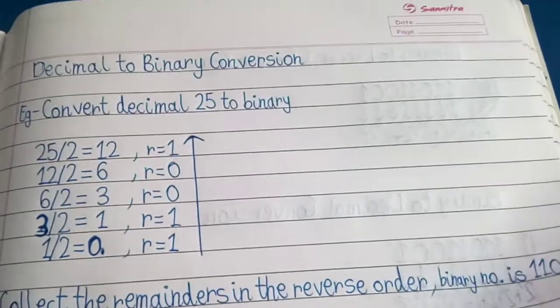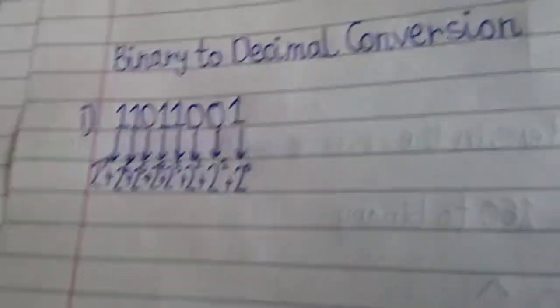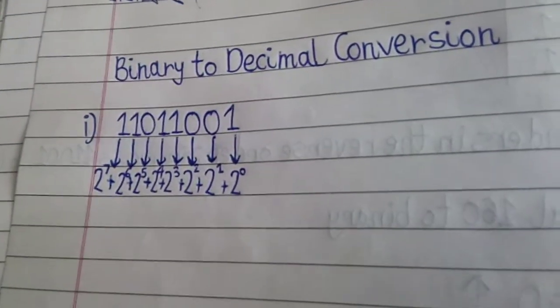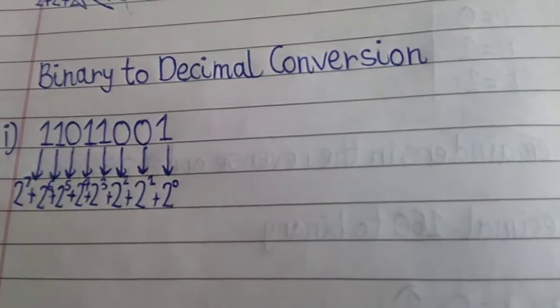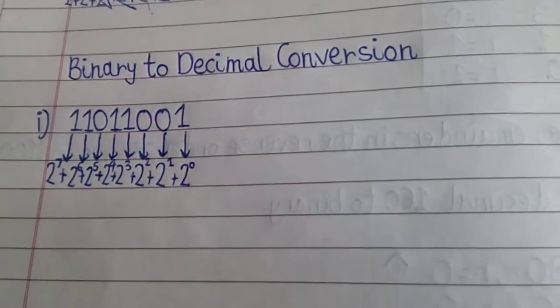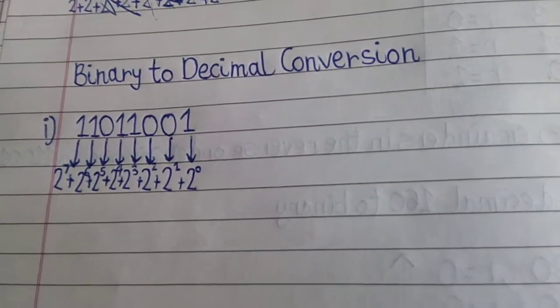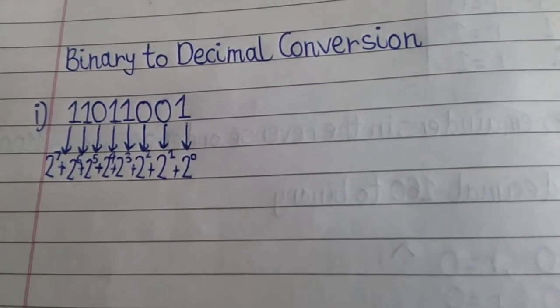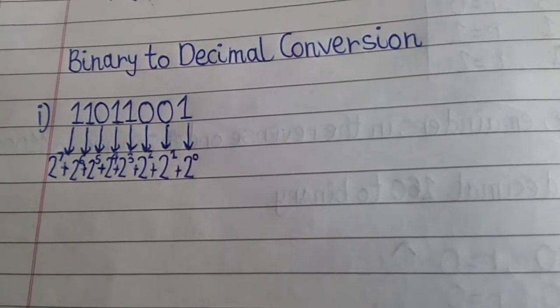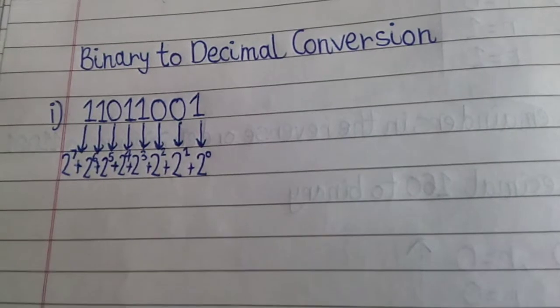Similarly, we can do from binary to decimal conversion like this. So before explaining you this concept, I would like to tell some rules. If you have to convert from binary to decimal, then the decimal value of any binary number can be found by adding the weights of all bits that are 1 and discarding or eliminating the weight of all bits that are 0.